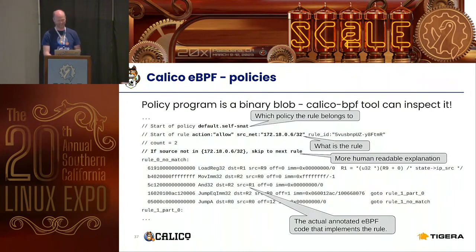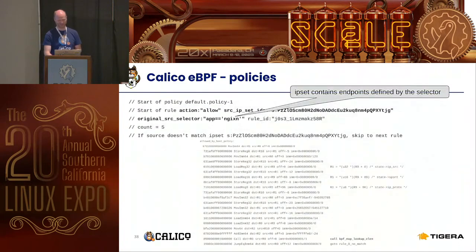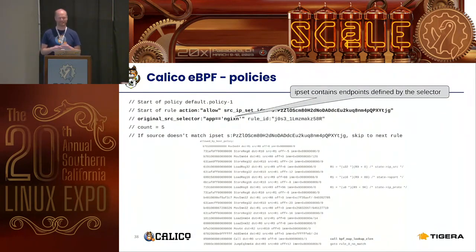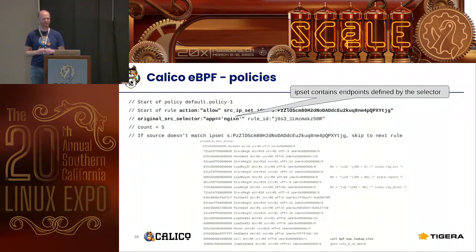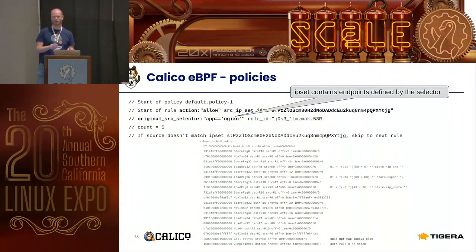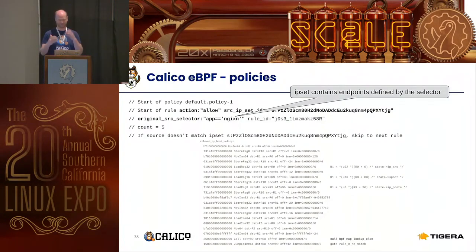Some policies don't have IP addresses encoded directly — if you have a service with tens or hundreds of backends, it would be silly to put them all as a list of addresses in the code. Instead we use what we call IP sets, borrowing the term from iptables — it's just a set of IPs. The policy dump shows which selector applies the rule and which IP set is used by the program. You can then use the calico-bpf tool with that IP set identifier to dump the IPs and verify whether Calico understands the cluster the same way you do.